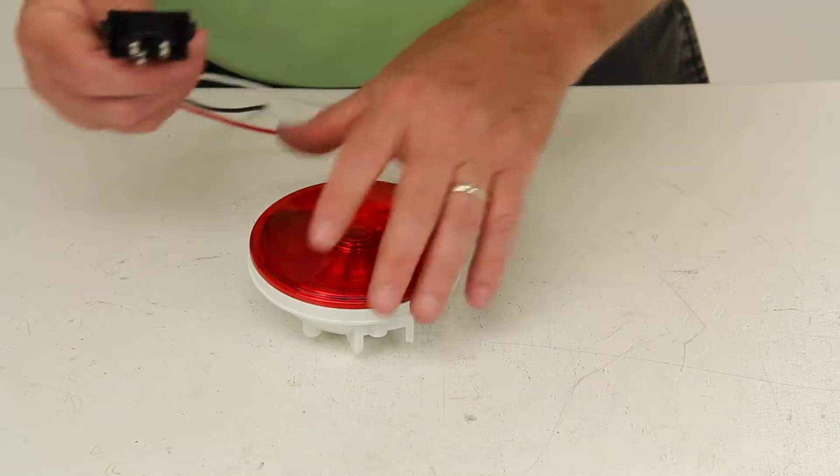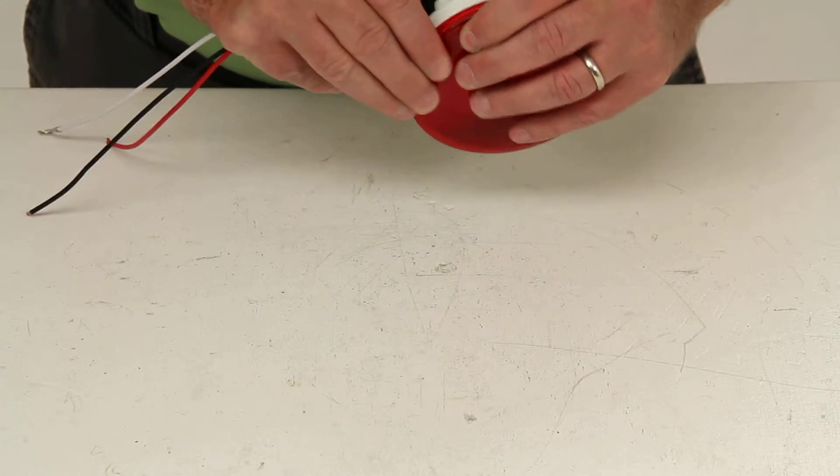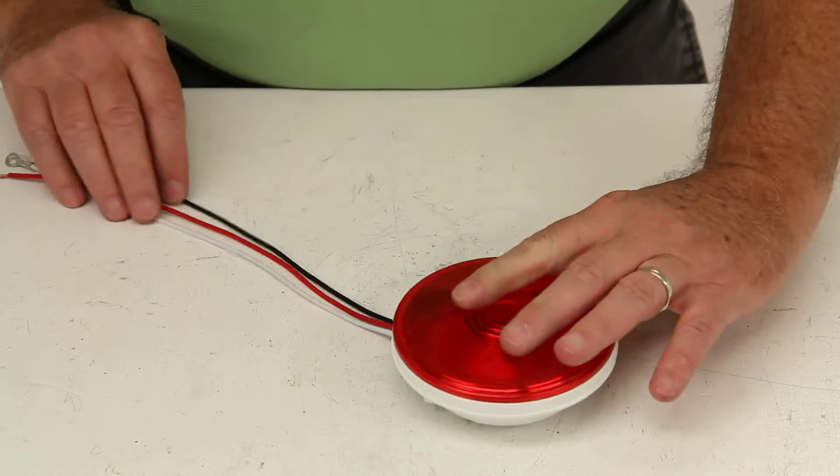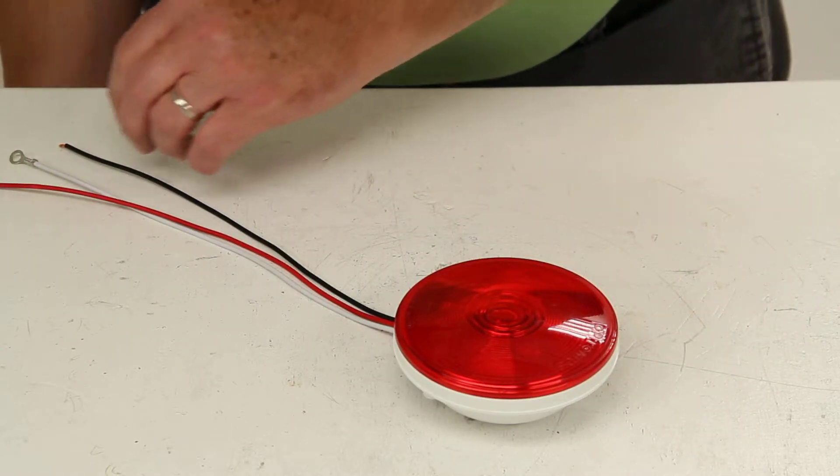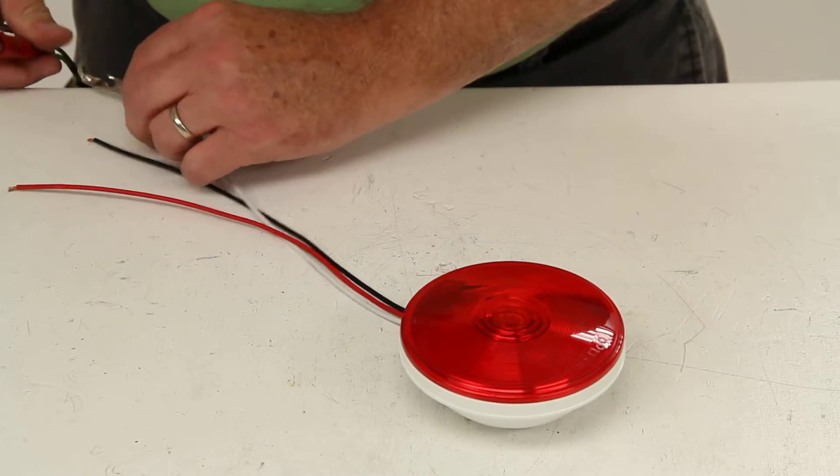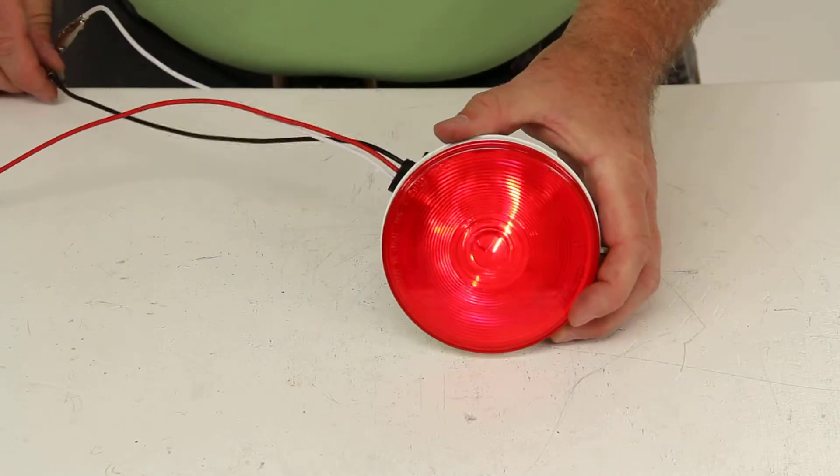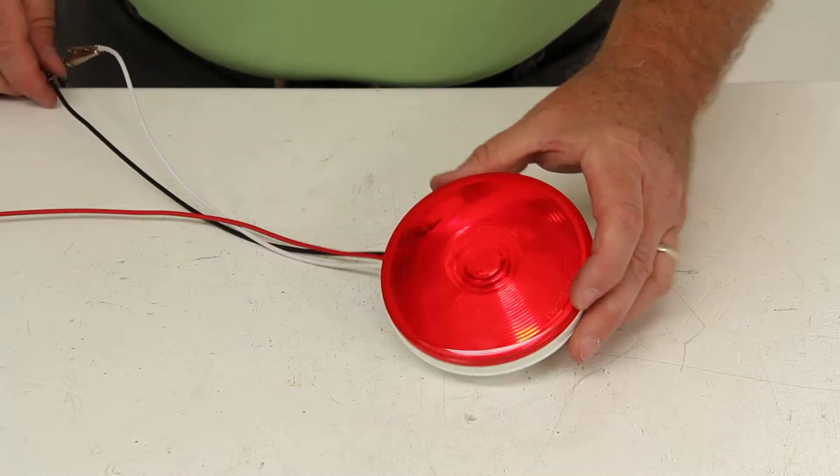And what I'm going to do is give you an idea of the brightness of the bulb or the tail light. We'll plug in the three-prong connector. And I have a power supply here. We'll connect the ground, white, to ground. And then the black will be the tail light. That will give you an idea of the tail light brightness.